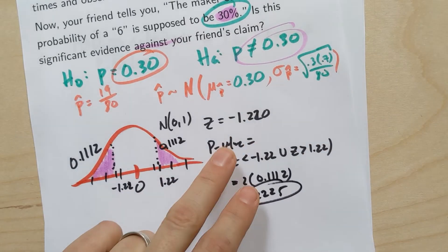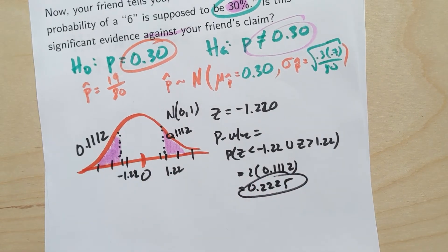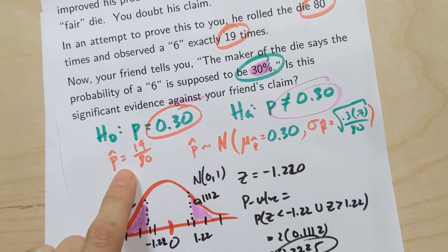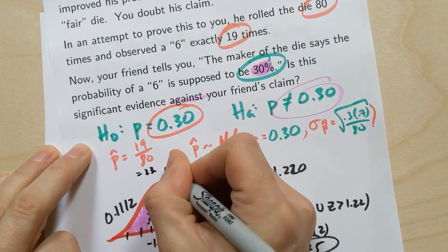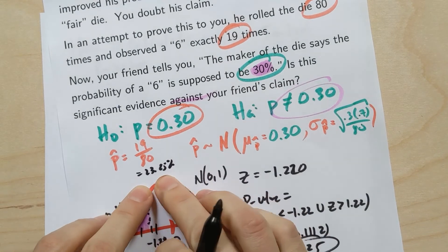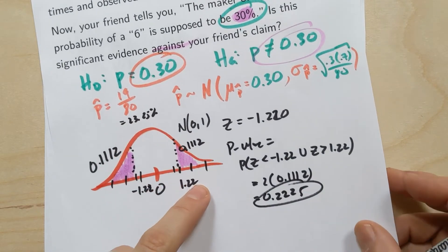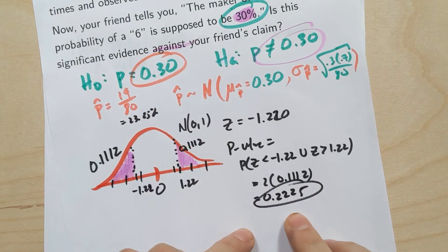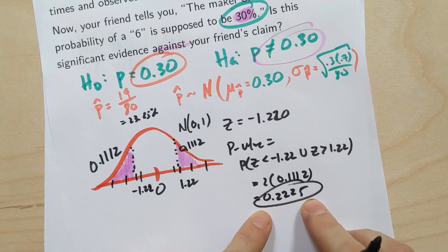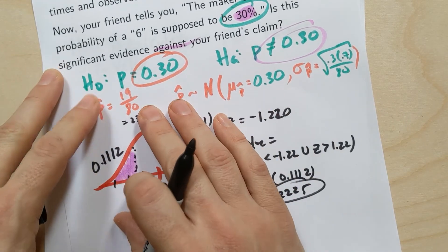So is the fact that our friend had less than 30%, remember this was about 23.75%, 23.75% is less than 30%. Was that significant evidence against his claim? In fact, no. The P value says that there was a probability of 22.25% of getting a sample statistic at least as extreme as the one your friend actually did get.